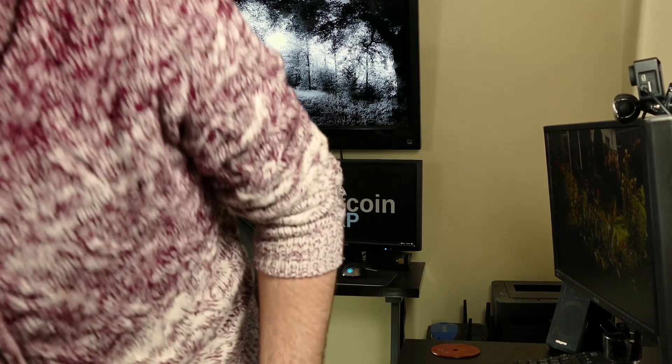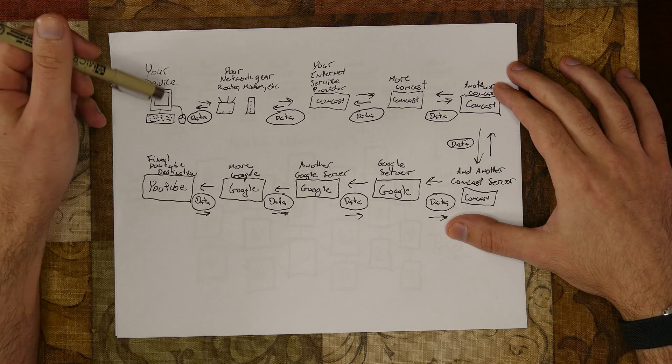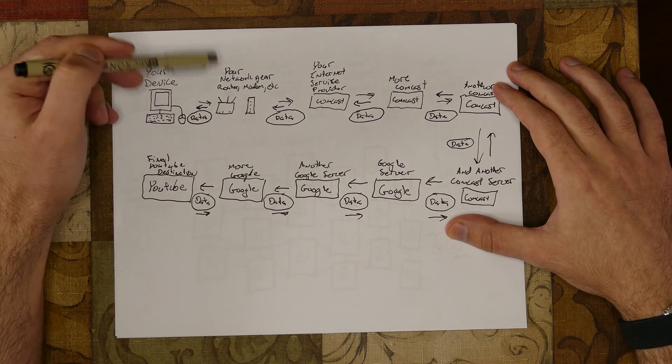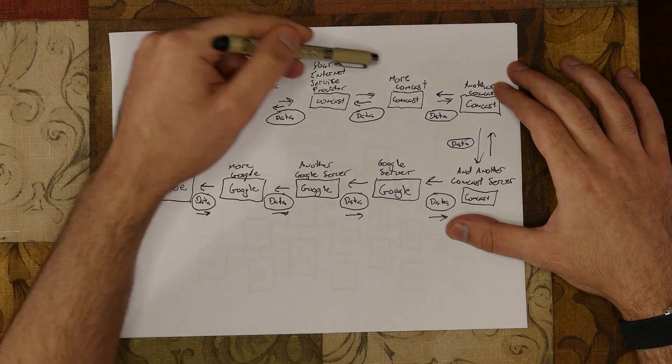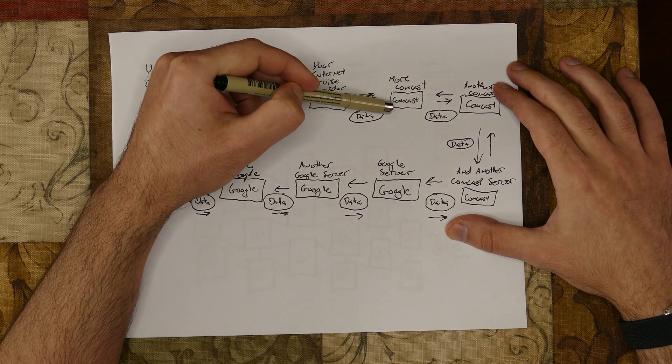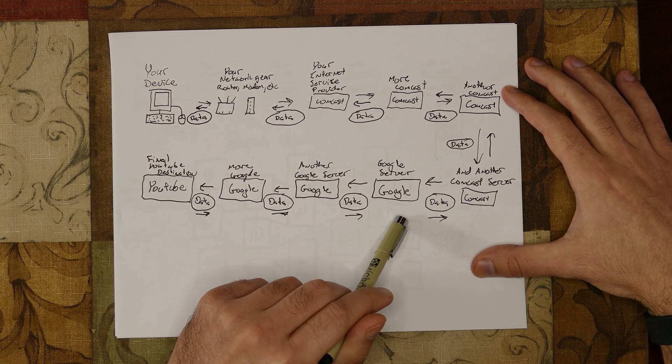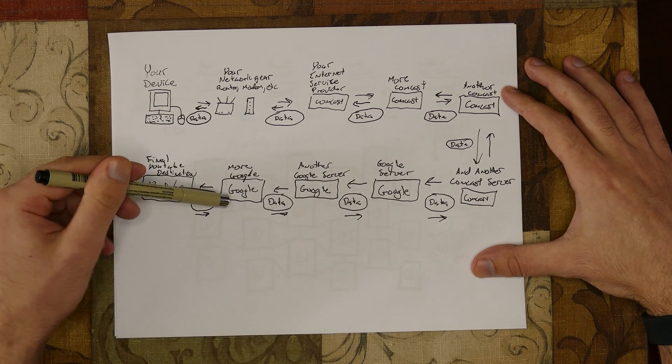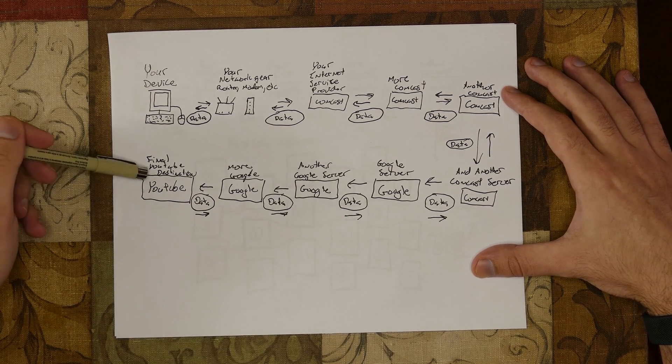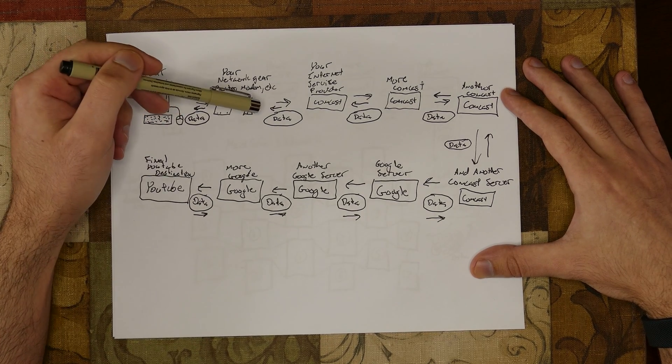Let's go to my dining table for a better look. Here's a simple explanation of the path your data takes once it leaves your computer. Your data travels from your computer to your router and your modem, and then to your internet service provider, and then to another internet service provider server, and another, and another, and then to a Google server, and then another Google server, and then another Google server, until it finally reaches youtube.com. Each of these hops need to be trusted to protect your data.